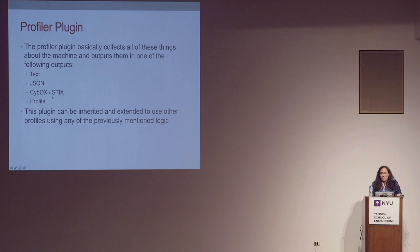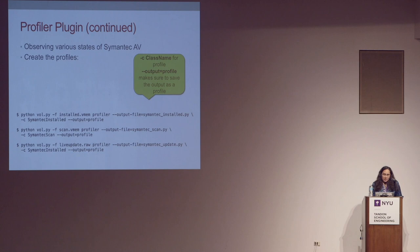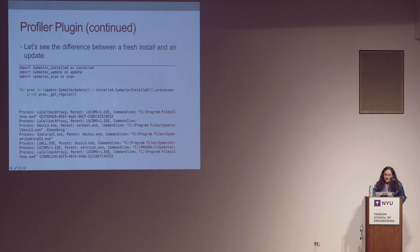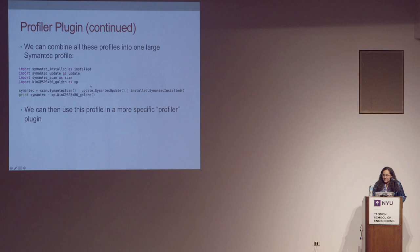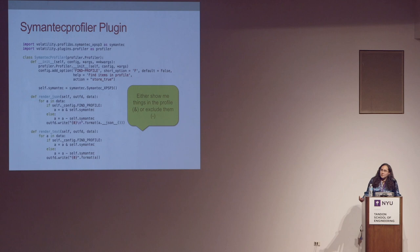Here's an example where we're running the Profiler plugin and building different profiles — a profile for Symantec Antivirus after it's installed, while it's doing a scan, and while it's doing an update. In just a few lines of code I can see all the different artifacts that Symantec Antivirus contains. I can combine all of these into one large profile and even write another plugin for volatility to look for that particular version of Symantec or check whether it's not installed — just two different operations.